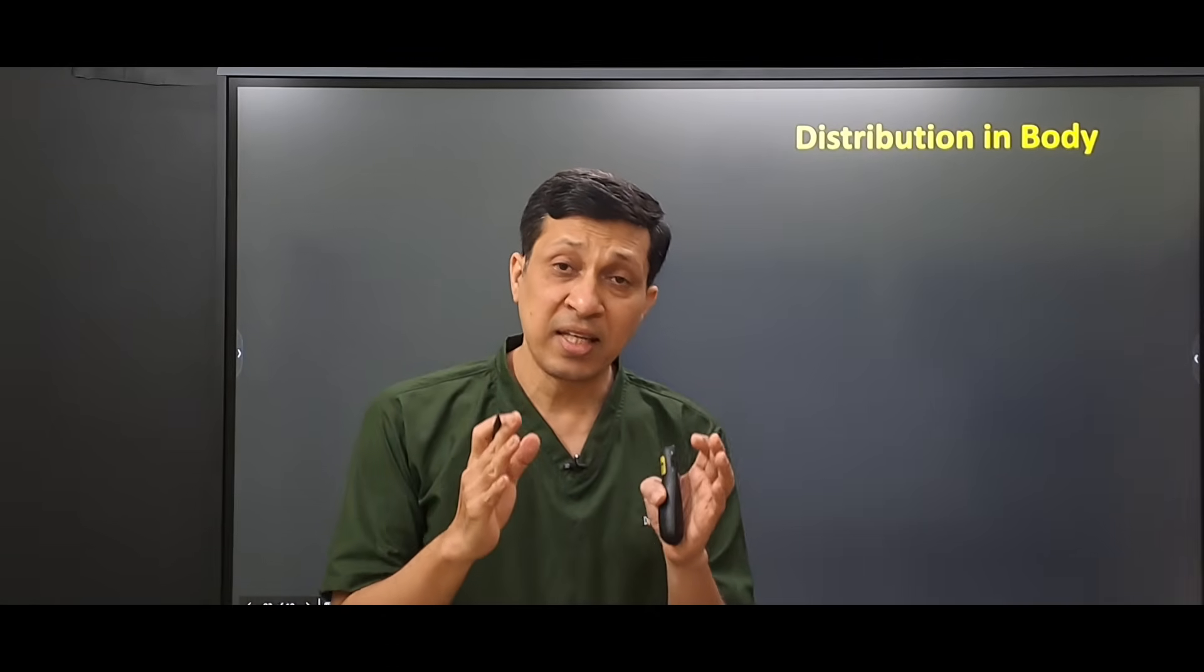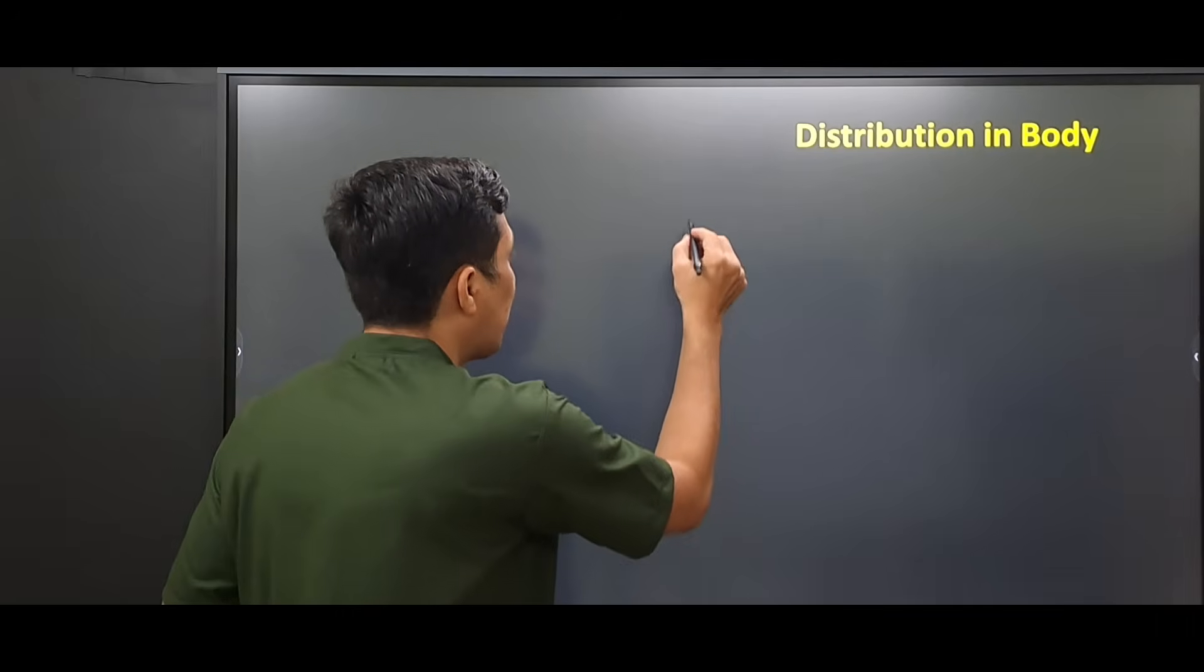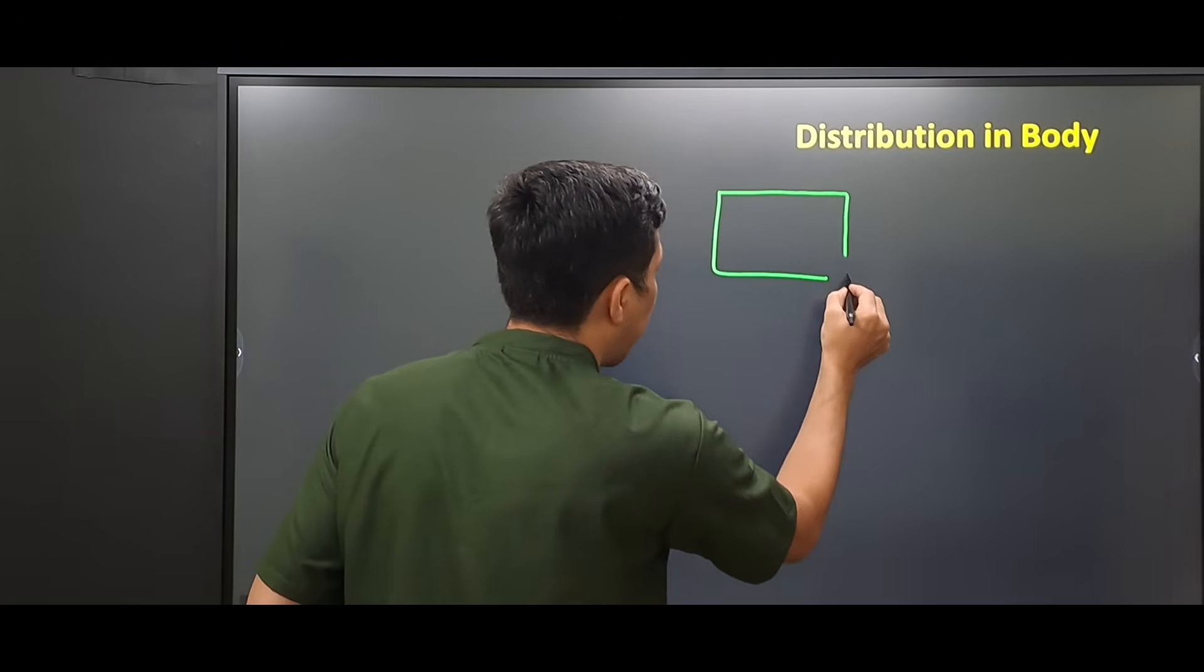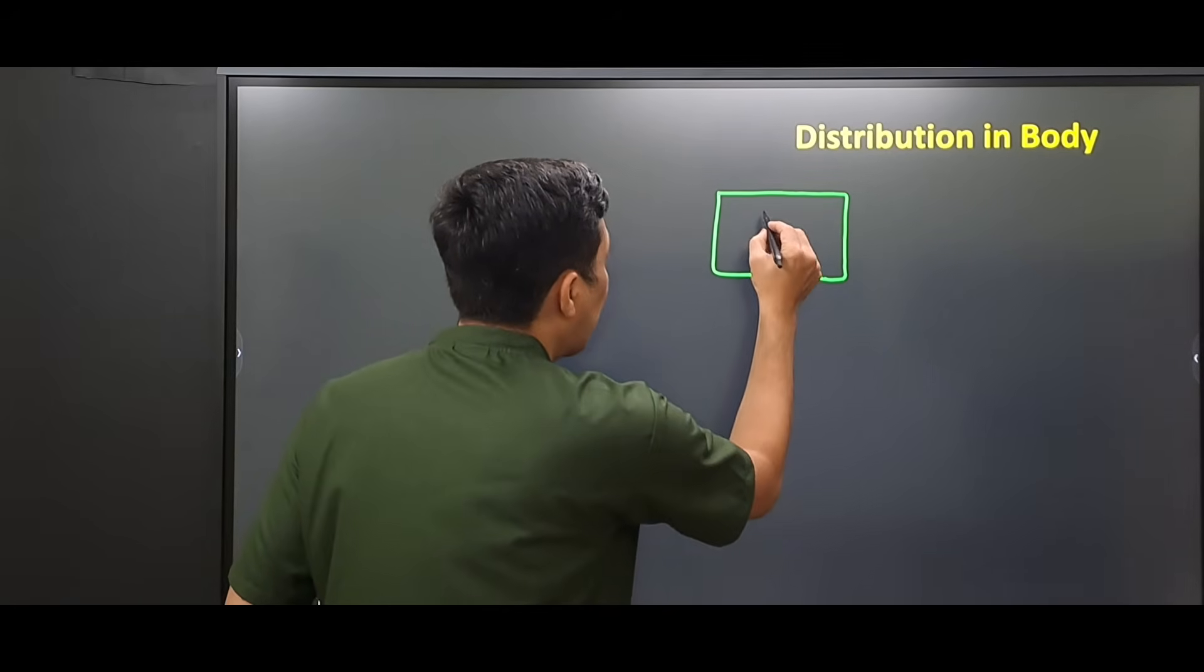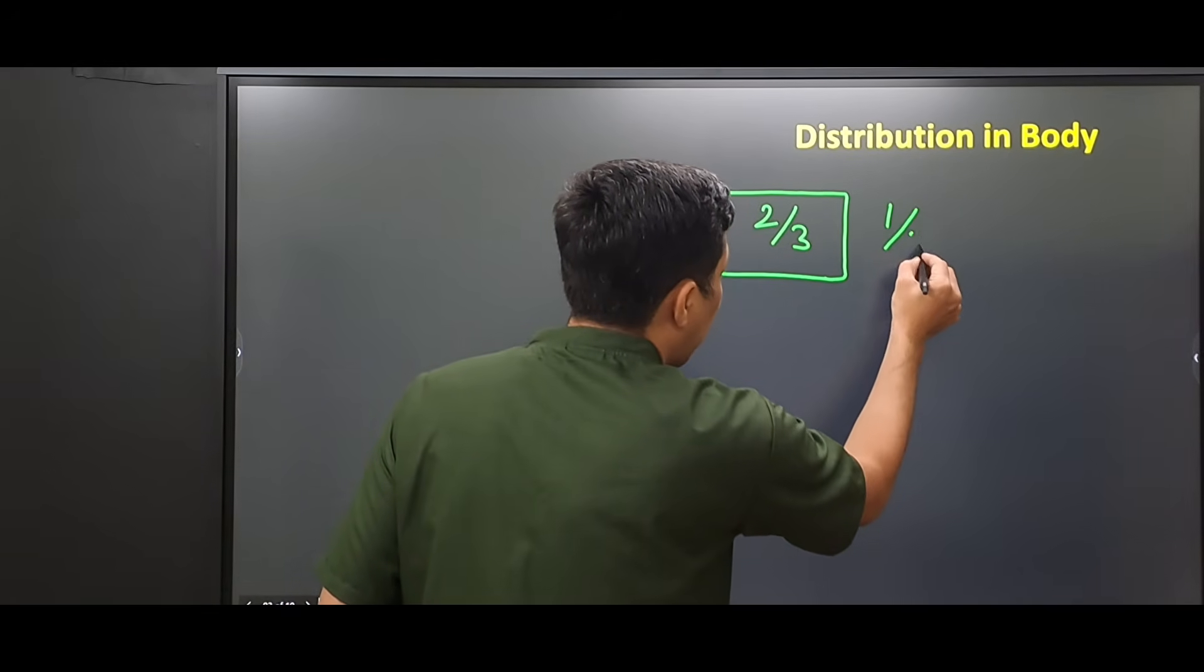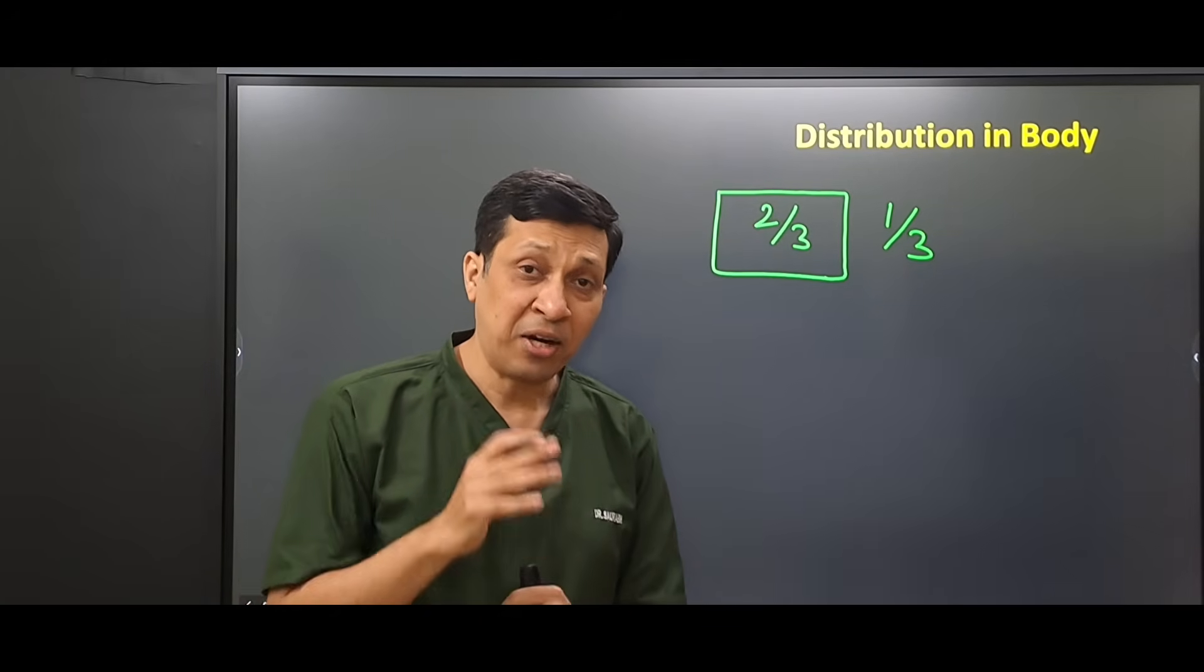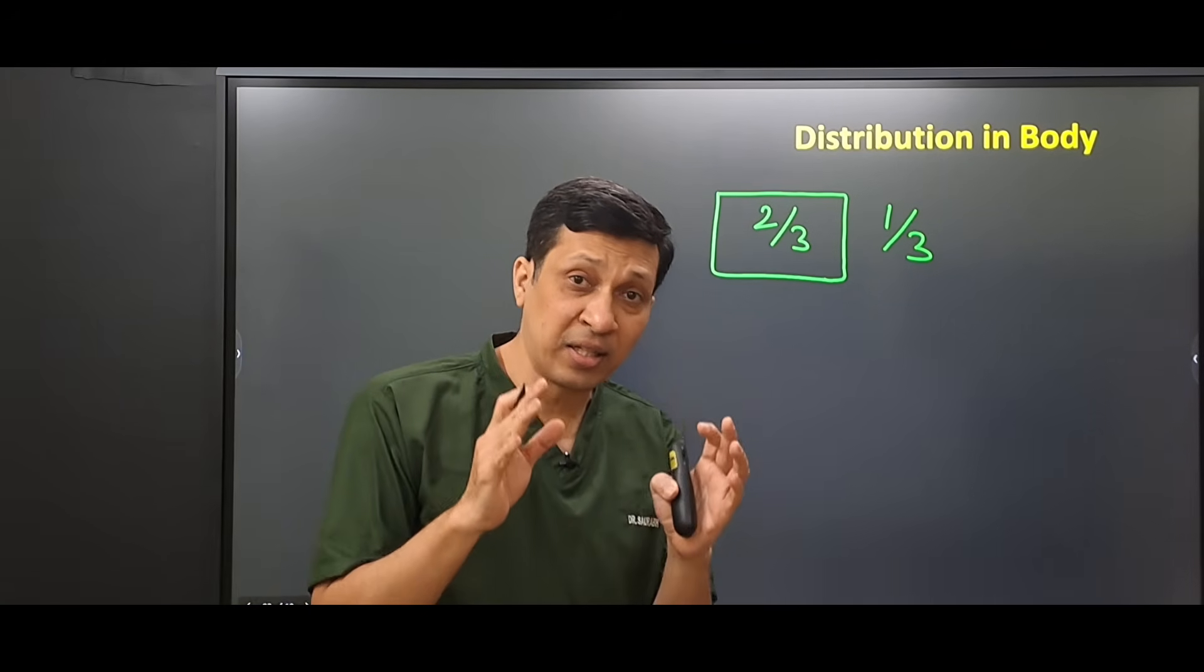Now we will see how this fluid is distributed inside the body after introduction. This is the intracellular compartment and this is the extracellular compartment. Two-thirds of body's water is present intracellularly and one-third is present in the extracellular compartment. We know that dextrose 5% is just plain water.